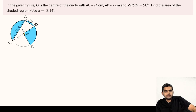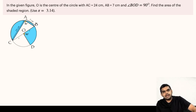Let us assume the radius of the given circle as r. Angle CAB will be 90 degrees because the angle subtended by the diameter on the circumference of a circle is always a right angle. Since BOC is the diameter, angle BAC will be 90 degrees.